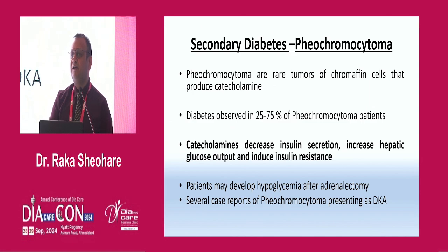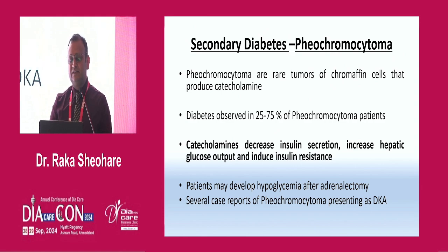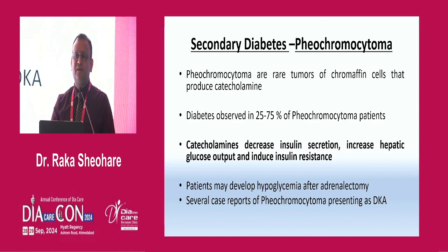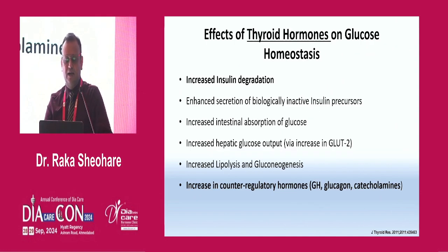Pheochromocytomas are rare chromaffin cell tumors that release high levels of catecholamines. 25% to 75% of pheochromocytoma patients have diabetes. A distinguishing feature is that these patients sometimes present with diabetic ketoacidosis, unlike other endocrinopathies. Pheochromocytoma patients are highly brittle due to the catecholamine excess.